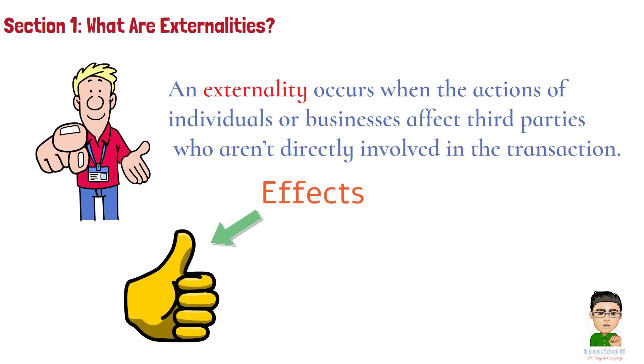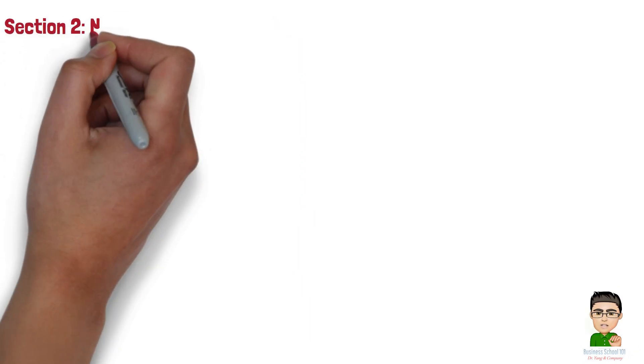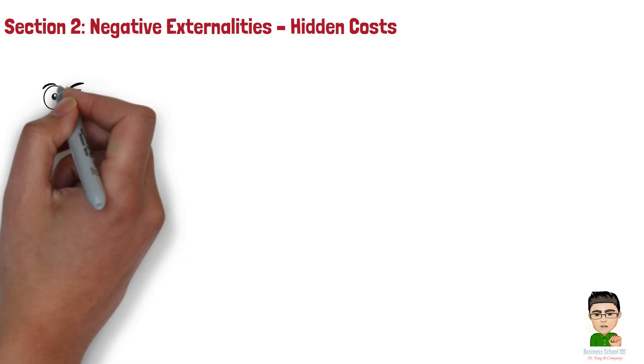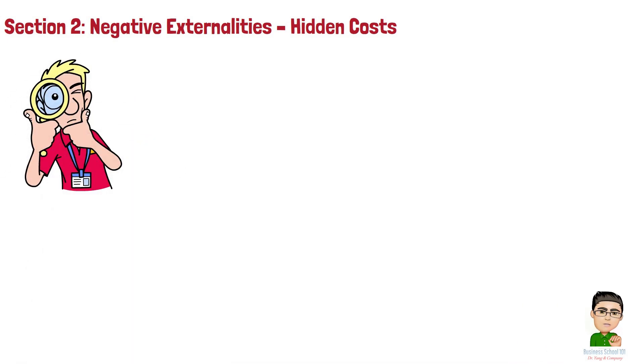Section 2. Negative Externalities – Hidden Costs. Now, let's take a closer look at negative externalities, where the hidden costs fall on others, not just the decision maker.